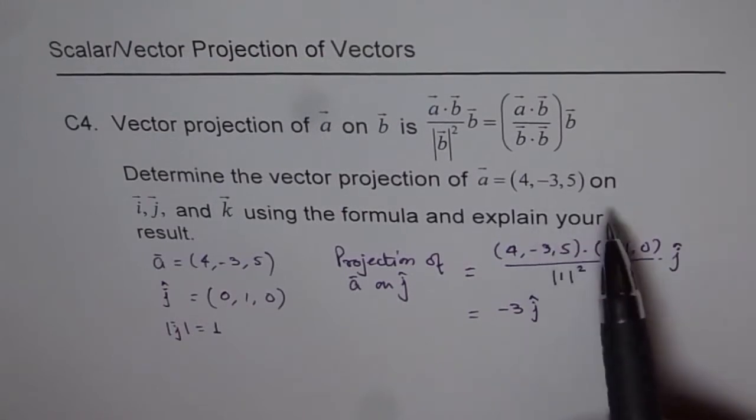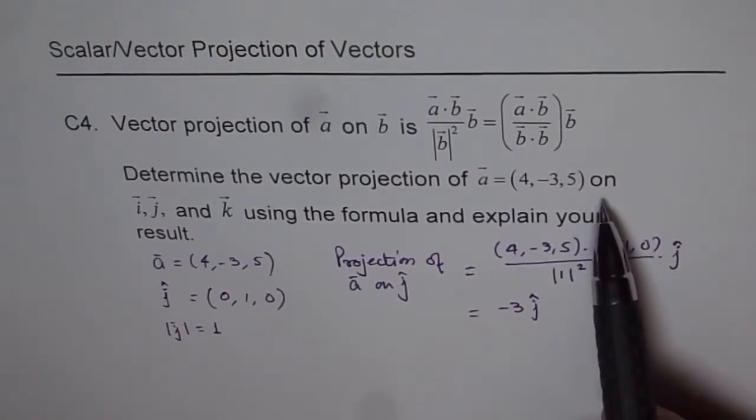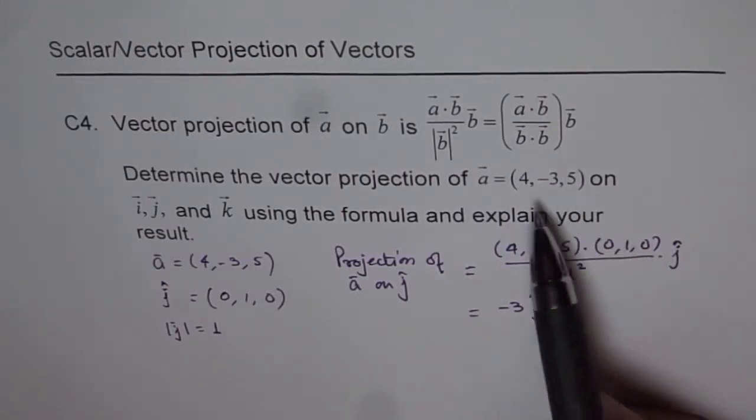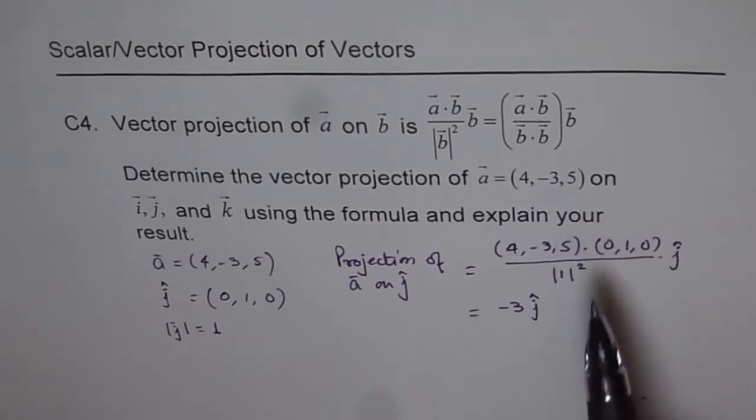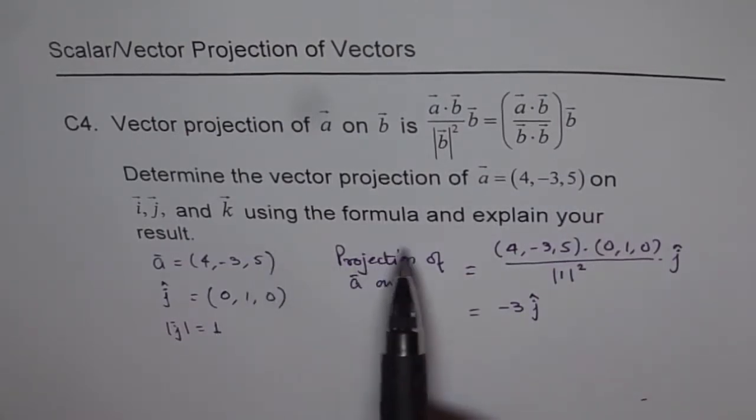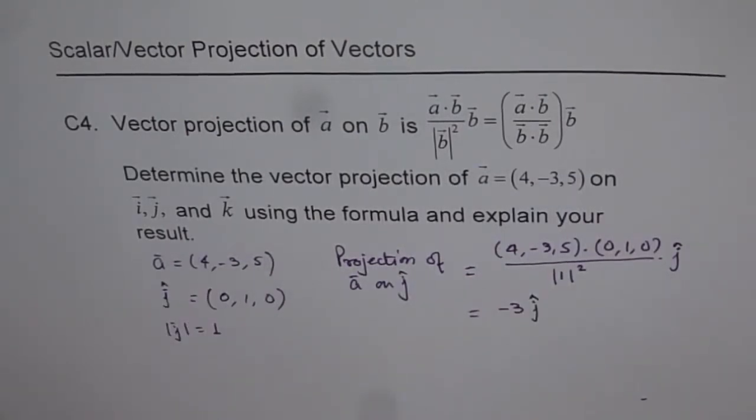So that is how it is. For any given vector in R3, the projection of the vectors are its direction numbers. Now it says, explain your result.